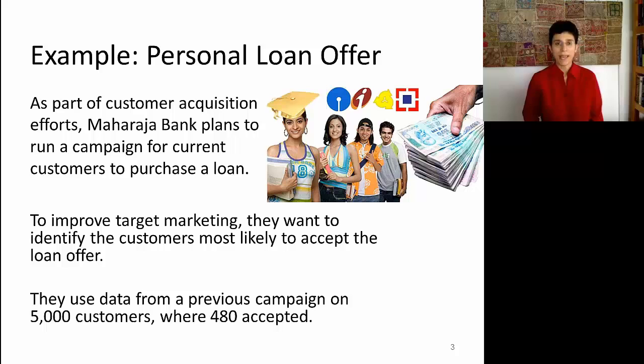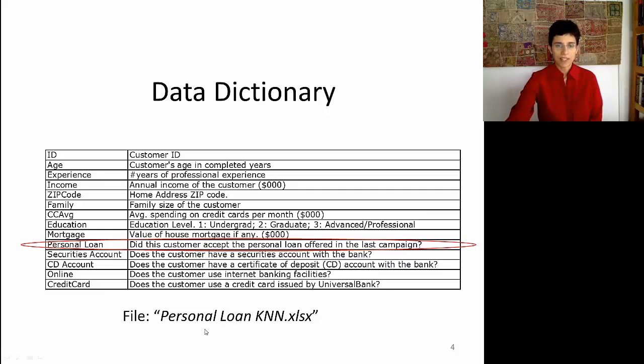Let's go back to an example that we saw earlier on. For a bank, Maharaja Bank, run a campaign for current customers to purchase a loan. To improve target marketing, they want to identify the customers that are most likely to accept the loan offer. Now that we've talked about performance evaluation, what type of objective is this? Is this profiling, classification, or ranking? The Maharaja Bank uses data from a previous campaign on 5,000 customers, where out of these 5,000, only 480 accepted. We have a data dictionary in the Excel file mentioned here at the bottom. The Y variable of interest is personal loan, and this is a binary variable that tells you whether the customer accepted or did not accept the loan. We have a bunch of demographic information, as well as some banking information.